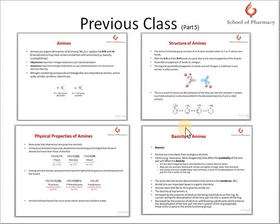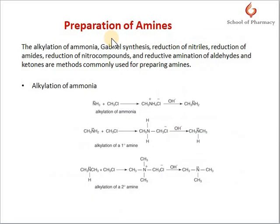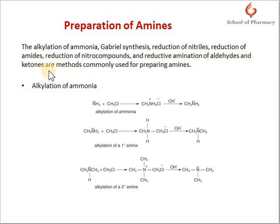Now let's look at how we can prepare these amines. Amines are prepared by: alkylation of ammonia, Gabriel synthesis, reduction of nitriles, reduction of amides, reduction of nitro compounds, and reductive amination of aldehydes and ketones. These are the most commonly used methods for preparation of amines.